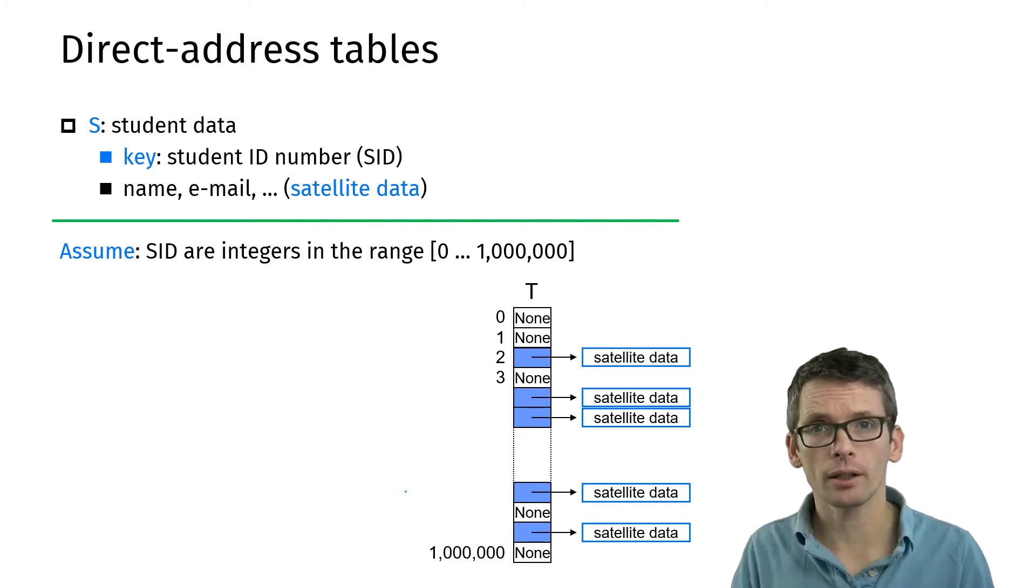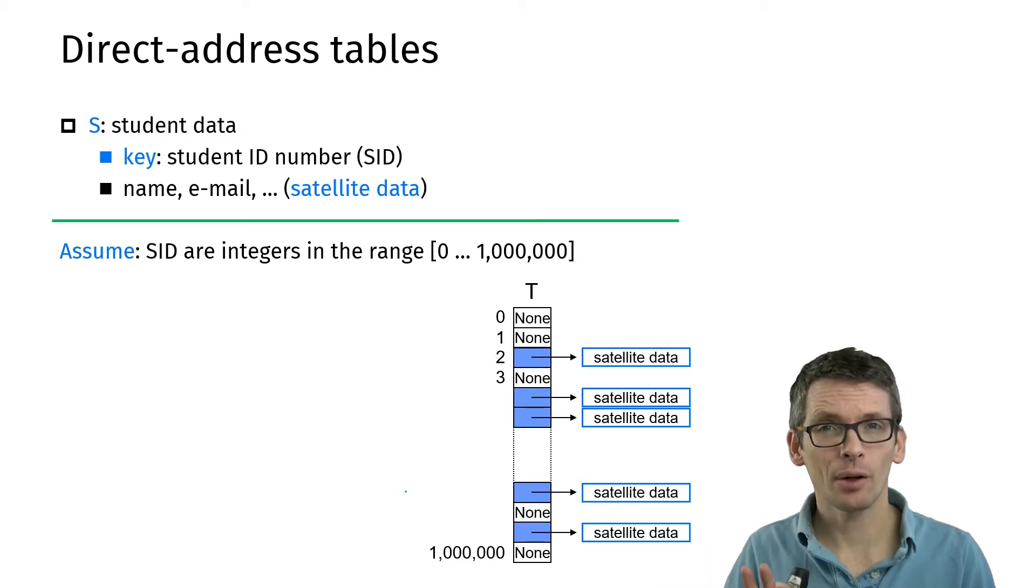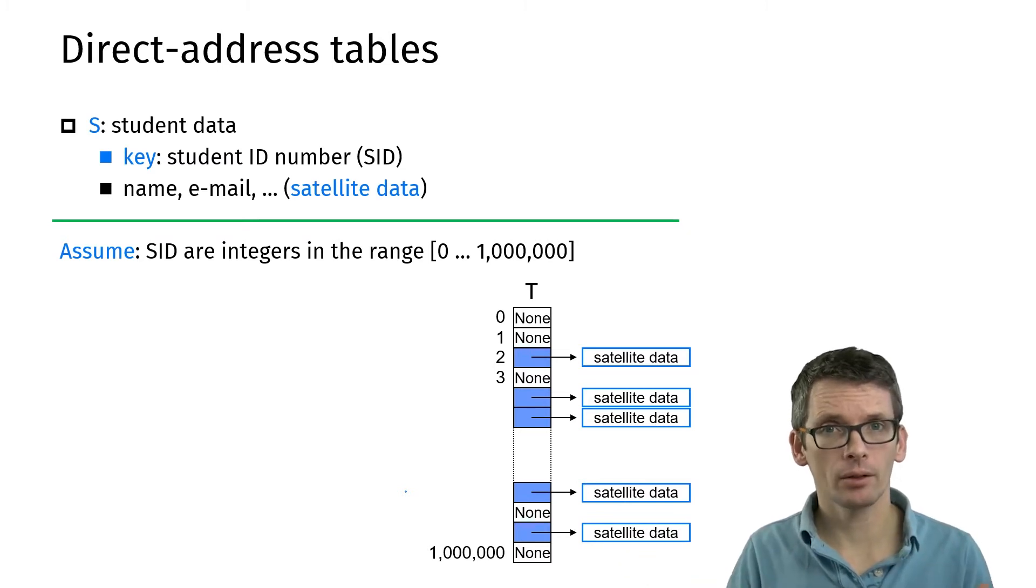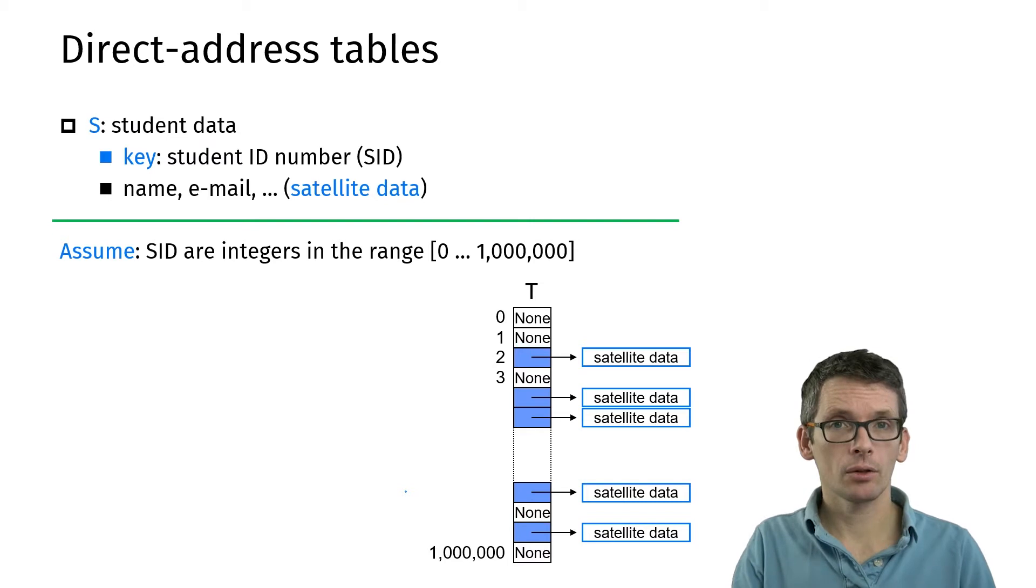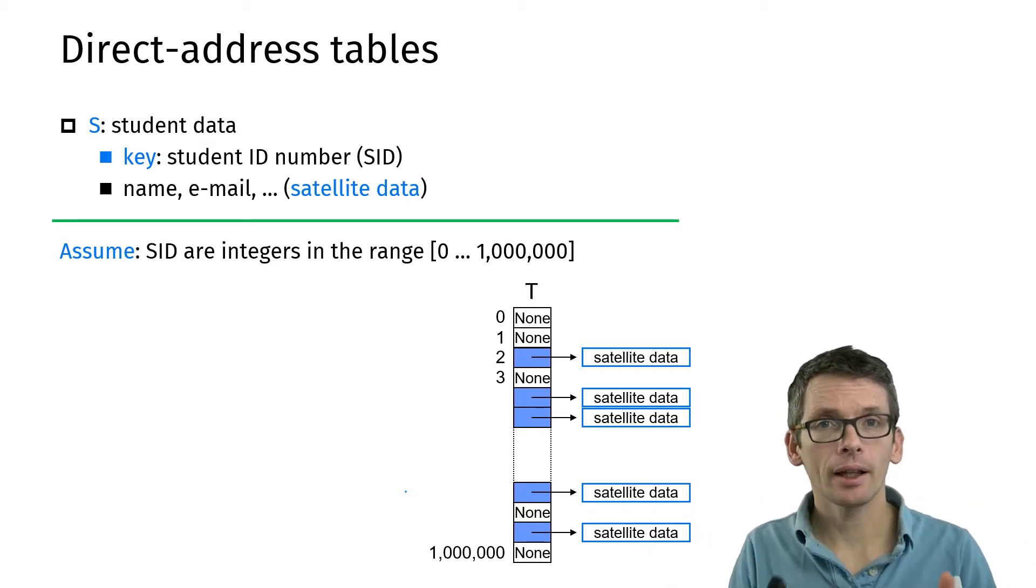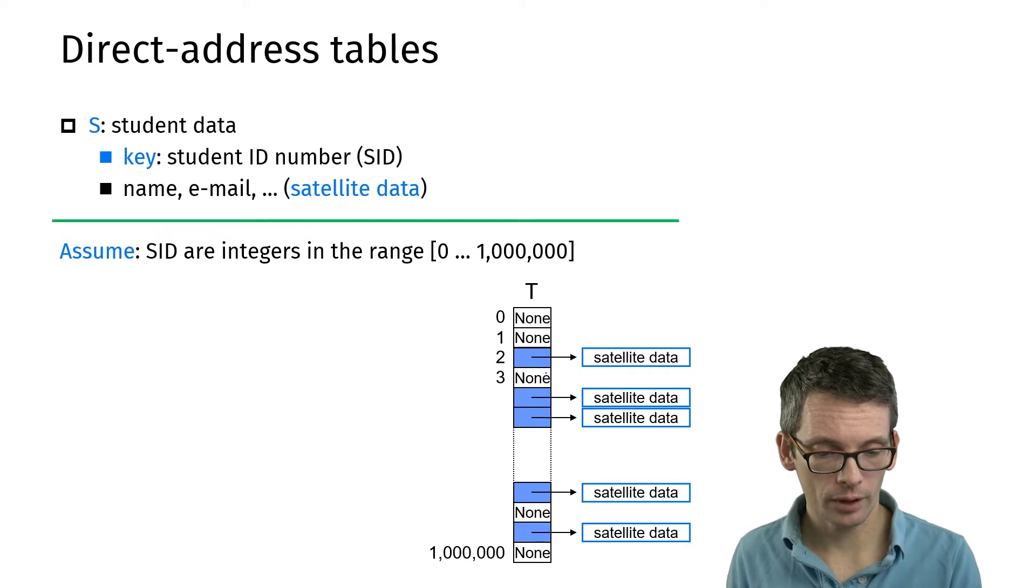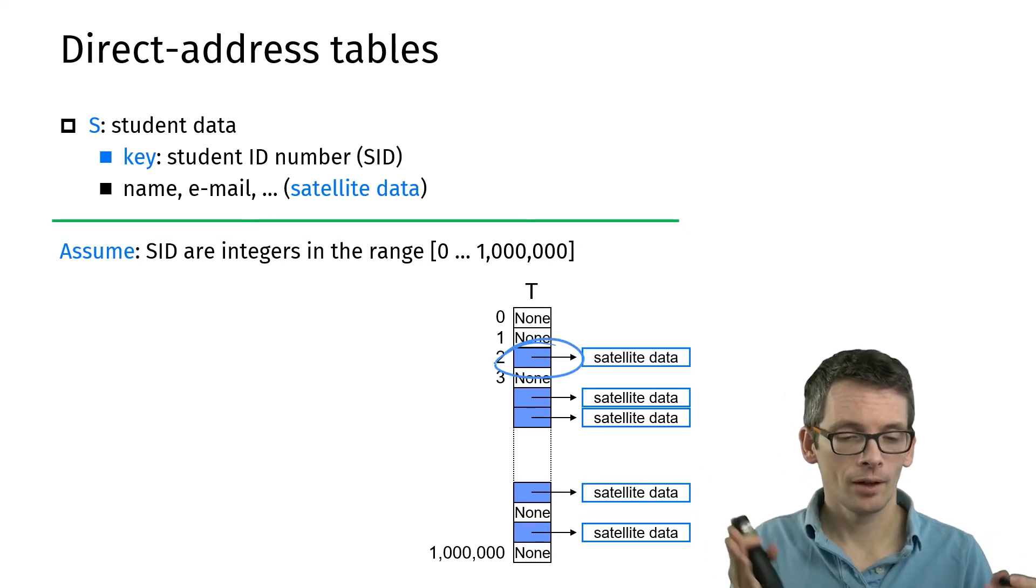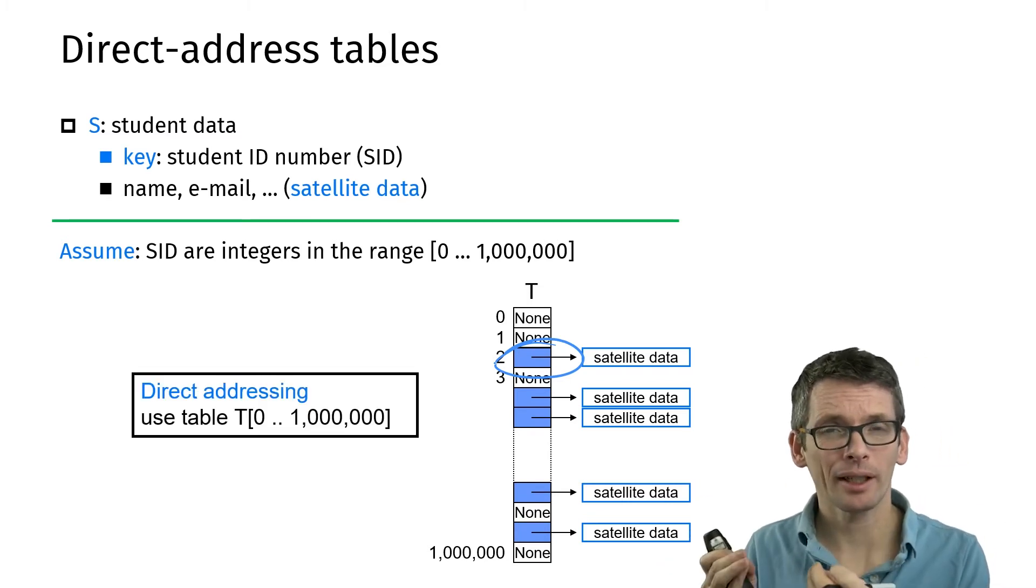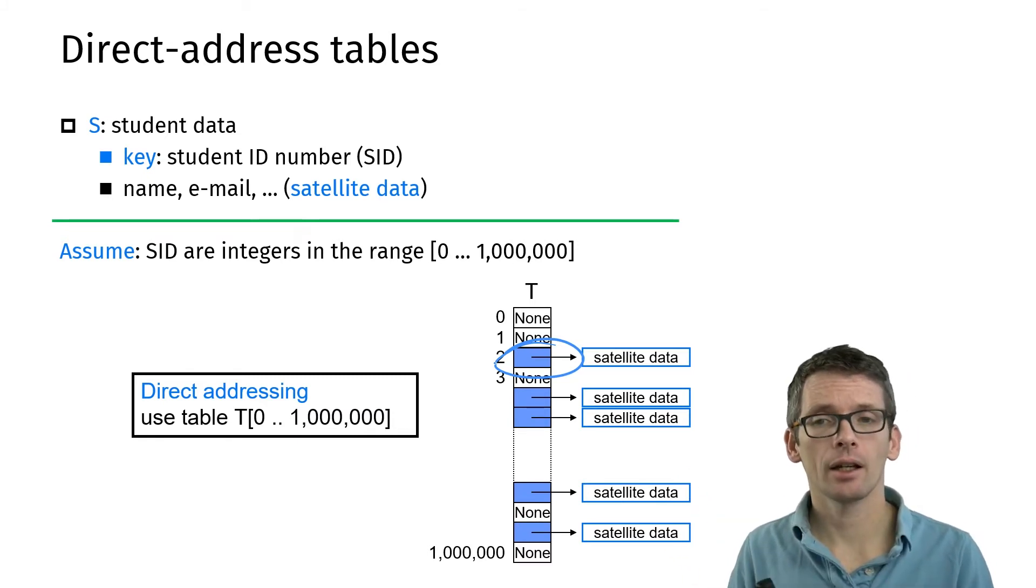Assume we have again this student data. We have the keys, the student IDs, and some associated data. Let's further assume that the keys are in a range between zero and one million. A very simple way to get an efficient dictionary is to simply have an array of size one million or one million and one, and in that store the data in such a way that if your student ID, for instance, is 2, then at position 2 I'm going to store your data. That is called direct addressing because I directly take the key and use it as index in the array.